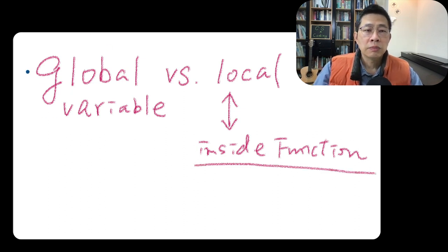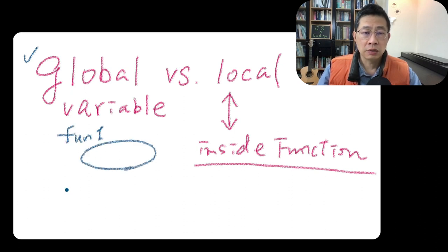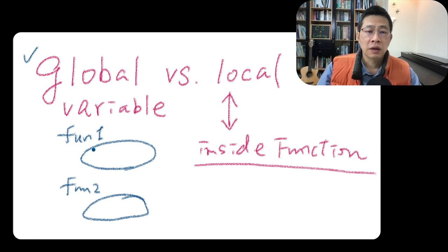So what about global variable? Let's suppose you have written a lot of functions. You may have function one, function two, you define it. And each function have its own local variable. But sometimes the function wants to access a variable which doesn't belong to only this function, maybe you put it on the global. Outside the function, you define a variable here.